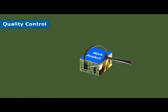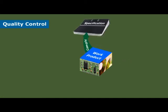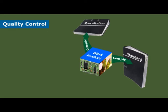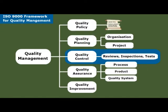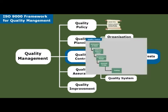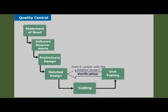When we complete a work product, we perform quality control, which means we determine if it complies with its specification and any designated standard for best practice. We conduct design reviews, inspections, and tests. For example, unit testing verifies that a component complies with its detailed design.